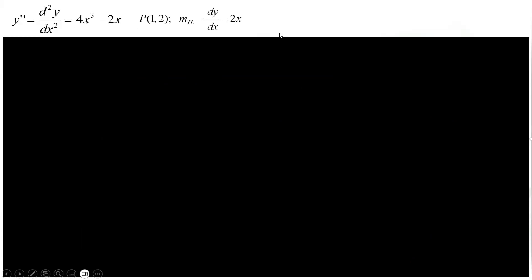First, you're given y double prime 4x cubed minus 2x. So, you're given point, it passes through 0,1,2 and that the slope of the tangent line, if you can recall your calculus 1, the slope of the tangent line is equal to 2x. So it passes through 0,1,2 and it has a slope of 2x. So, with those, let's solve for the y prime first.